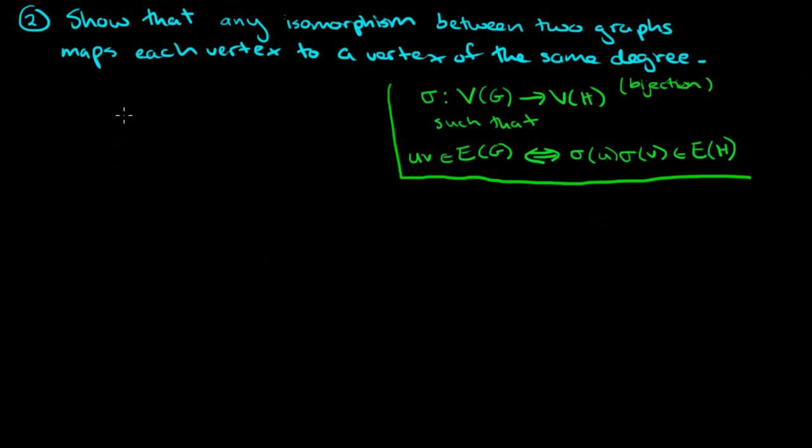Let's take a look at the following problem. We want to show that any isomorphism between two graphs maps each vertex to a vertex of the same degree.